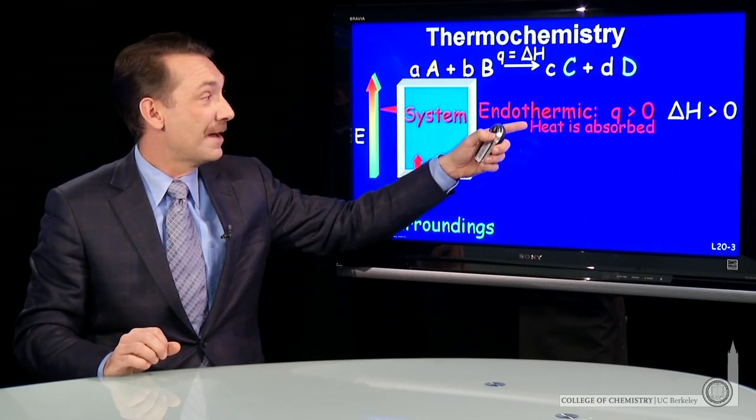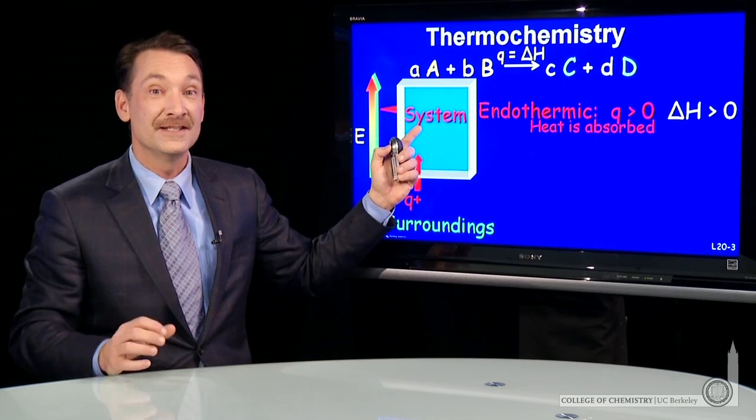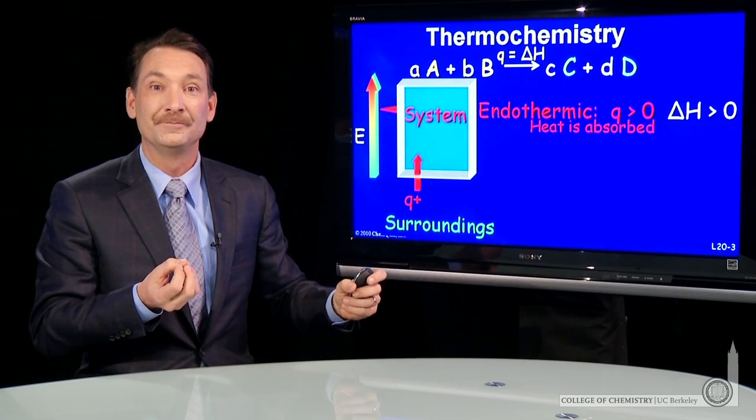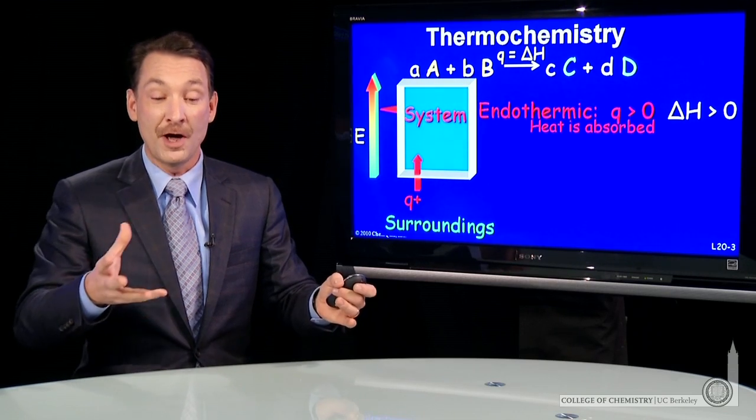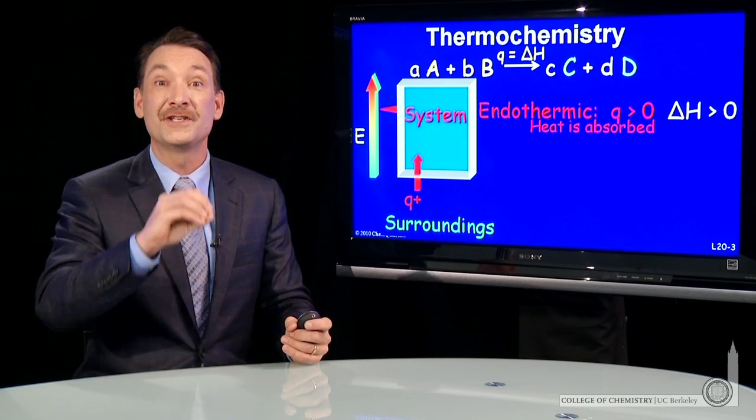Heat is absorbed in endothermic processes. Heat comes into the system. One classic endothermic process is the boiling of water—water going from liquid water to steam. That's an endothermic process where heat is absorbed.